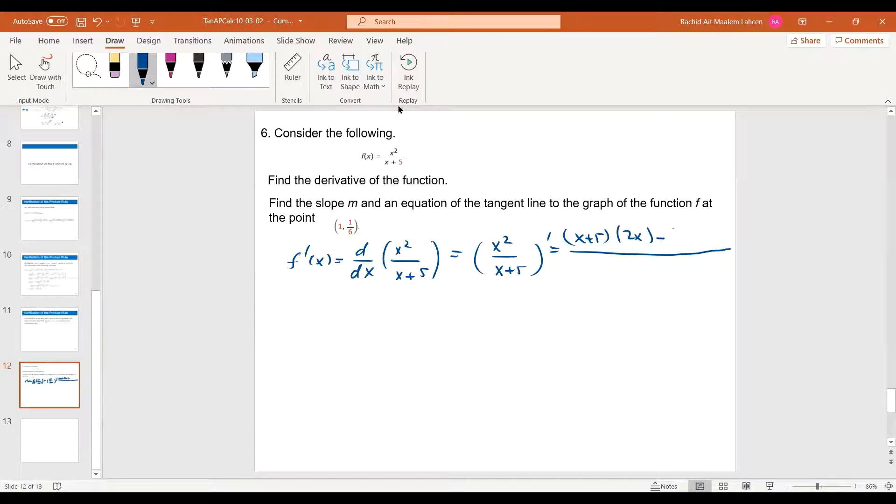So we'll do the denominator times the derivative of the numerator, minus we keep the numerator, times the derivative of the denominator, which is 1, divided by x plus 5 squared. 2x times x is 2x squared. 2x times 5 is 10x minus x squared. 2x squared minus x squared is x squared. Or we can factor x and it's x times x plus 10.